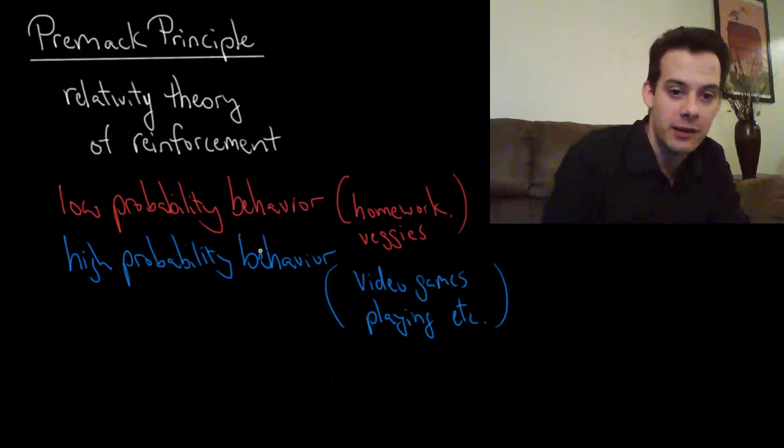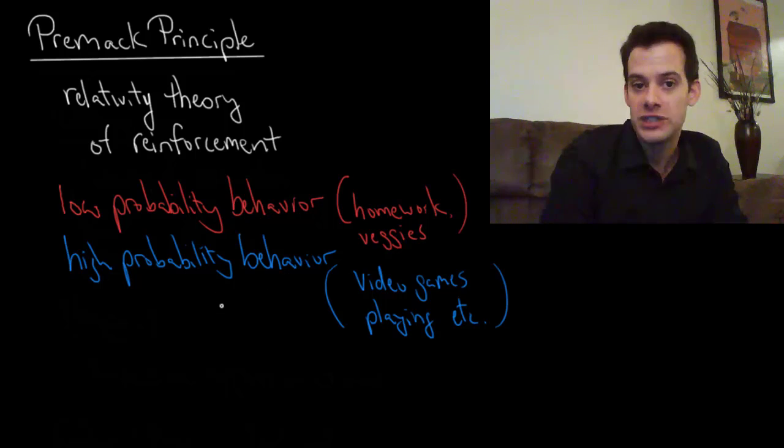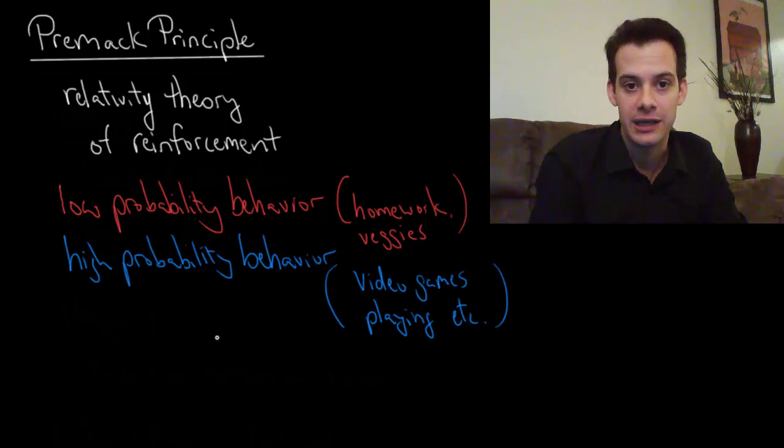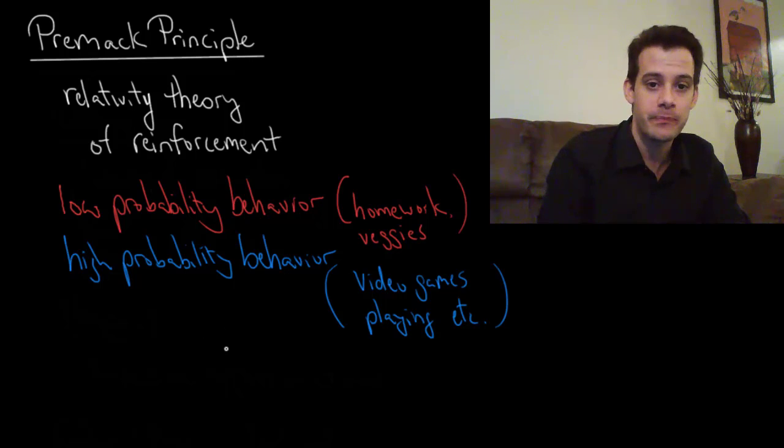So low probability behavior of eating vegetables is now going to be reinforced by getting to eat ice cream, which is another behavior. And that allows you to use that in order to encourage the performance of the low probability behavior. So that's the essence of this Premack Principle. Hope you found this helpful. If so, please like the video and subscribe to the channel for more.